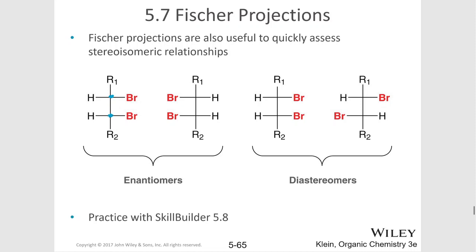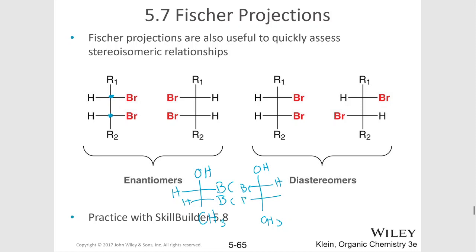We can draw the diastereomers for those. Let's draw these out: we'll make the top an OH and the bottom a CH3. At the center, we've got bromine, hydrogen, bromine, hydrogen. We can quickly draw its enantiomer by swapping all of the horizontals — now I've got the enantiomer, because we swap all the wedges and dashes. So on the first molecule, both bromines are on the right; on the enantiomer, both bromines are on the left.